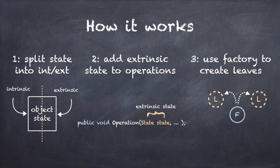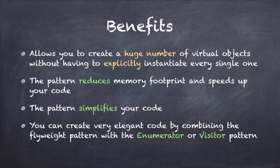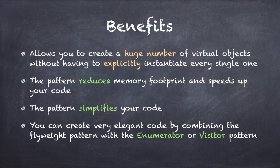The flyweight pattern offers a number of benefits. First, the pattern allows you to create a huge number of virtual objects without having to explicitly instantiate every single one of them. This lets you build a detailed data structure like a tree or a graph without having to instantiate each node, which will save a lot of memory if your data structure is very large. The pattern can also help you not only reduce the memory footprint but also speed up your code. If instantiating objects is an expensive operation, the flyweight pattern will help by recycling the same instance for each unique intrinsic state.